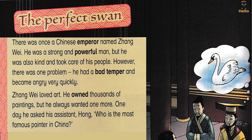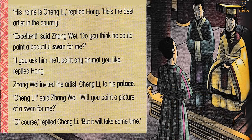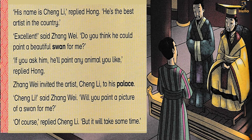Zhang Wei loved art. He owned thousands of paintings, but he always wanted one more. One day he asked his assistant Hong: "Who is the most famous painter in China?" "His name is Cheng Li," replied Hong. "He's the best artist in the country."